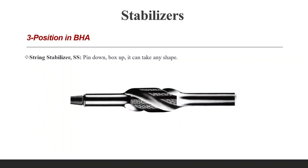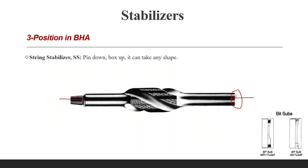The second type is the string stabilizer. It can take any shape and is recognized by having a box connection at the top and a pin at the bottom, connected to the bit sub or at any position in the string.